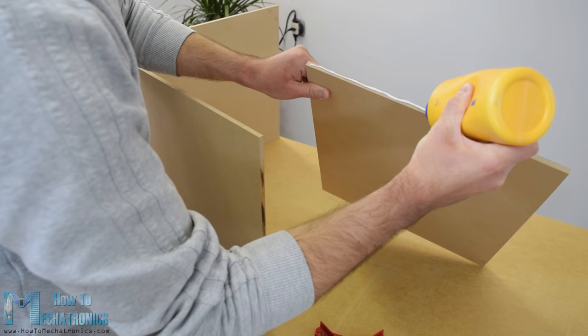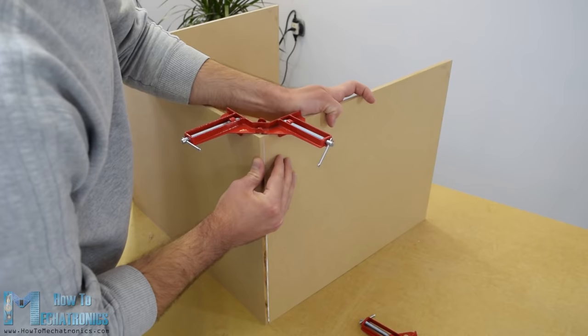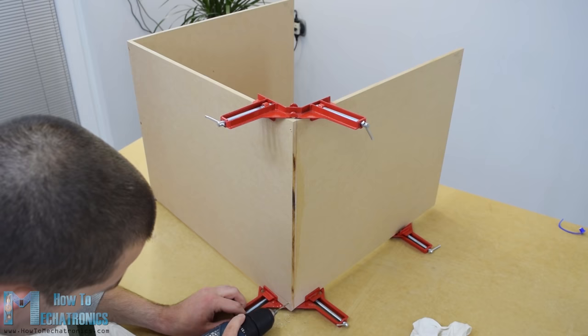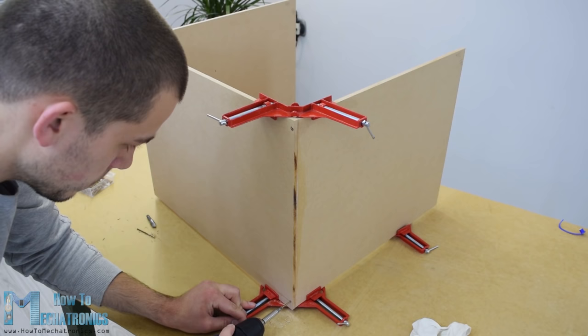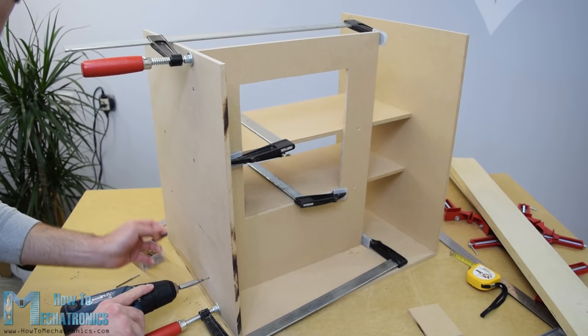Once I had all MDF parts ready I started assembling them using some wood glue and screws. For fastening the panels I used 90 degree angle clamps. Using a cordless drill I first made some pilot holes, then I made countersinks and screwed the 3mm screws in place. I used the same method for assembling all panels and for some of them I also used some F clamps.